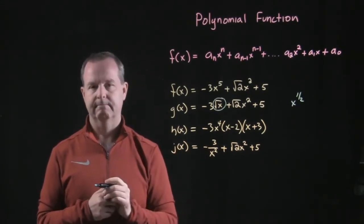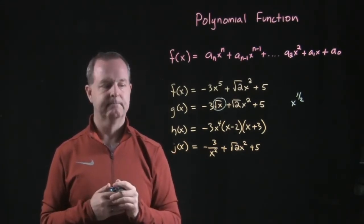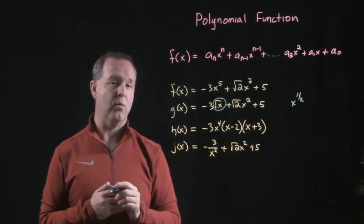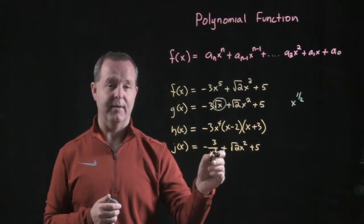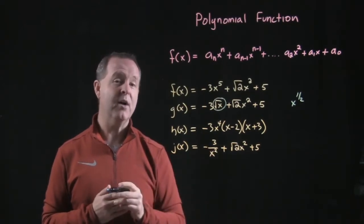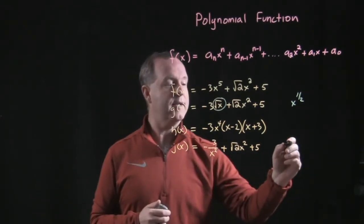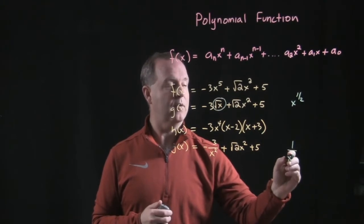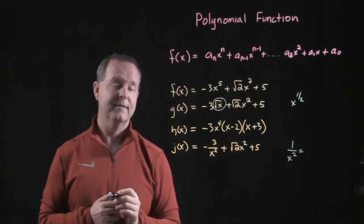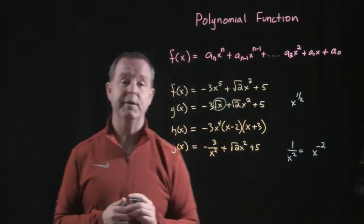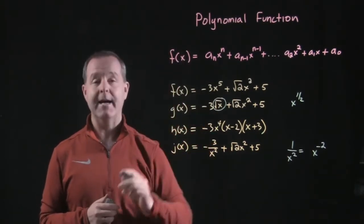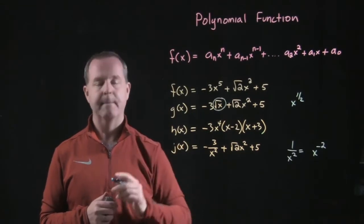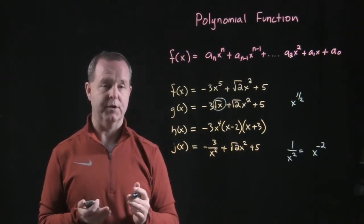j of x. What do you see about that one? Yeah, you can see that one as well, don't you? This x squared term right down here was in the denominator. So, remember what if we had some term like that? Well, that's equals to x to the negative two. So, this one has a negative integer as an exponent. So, j of x is not a polynomial function.